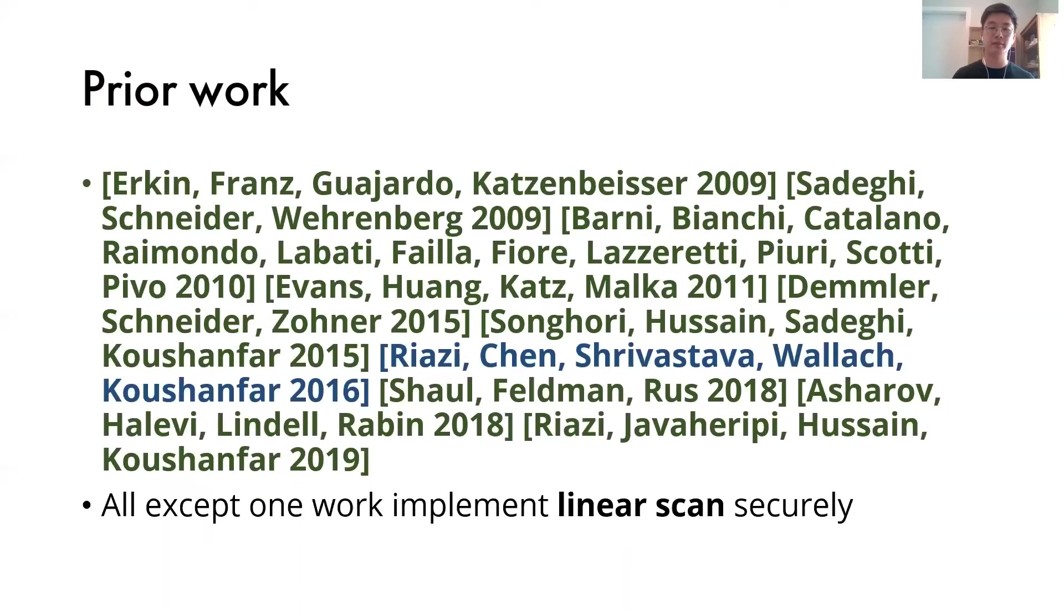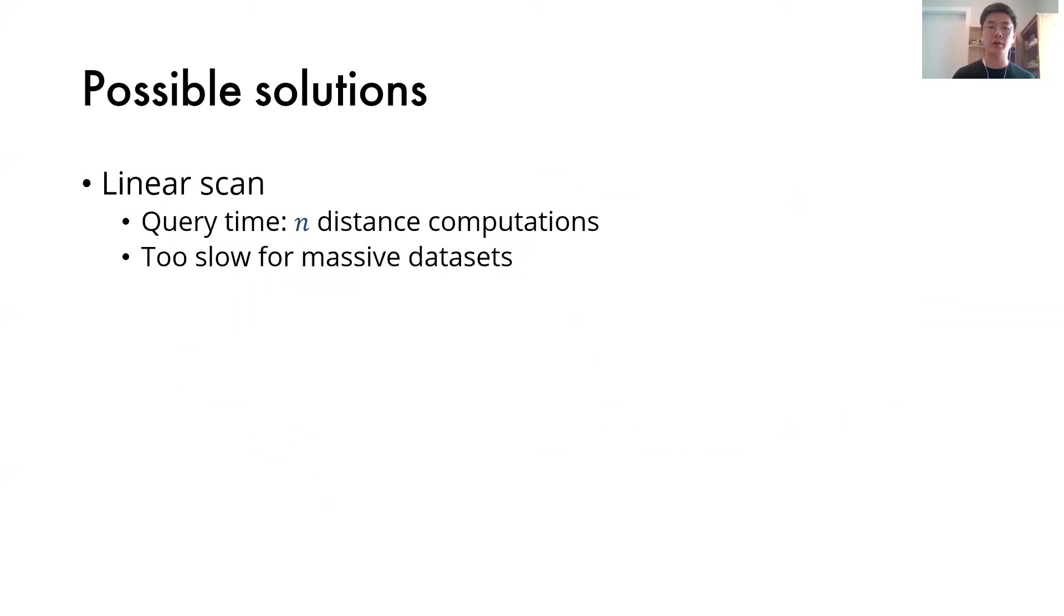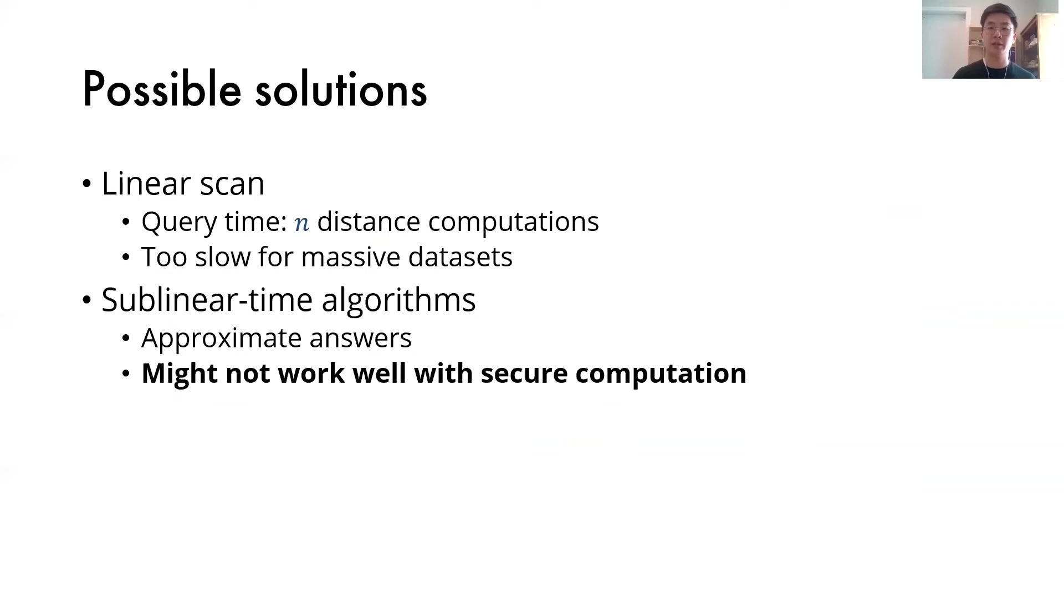There are some possible solutions to the secure k-nearest neighbor search problem. We can use the linear scan algorithm, which computes the distance between the query and all points in the database. This might be too slow for massive datasets. Or, we can consider sublinear time algorithms, which might give approximately correct answers. However, this might not work so well with secure computation, because we need to ensure that the server is unaware of the query point.